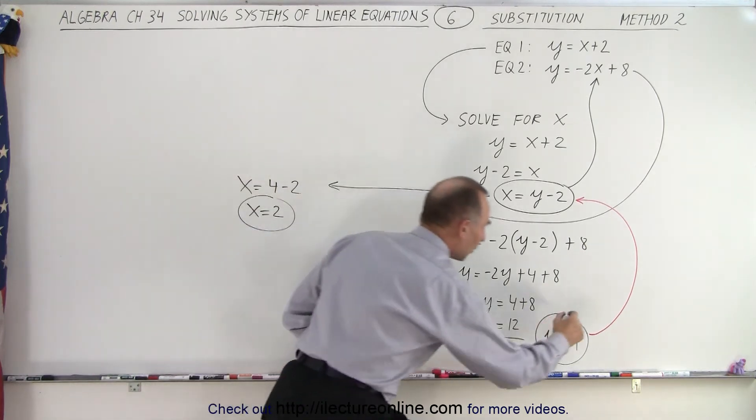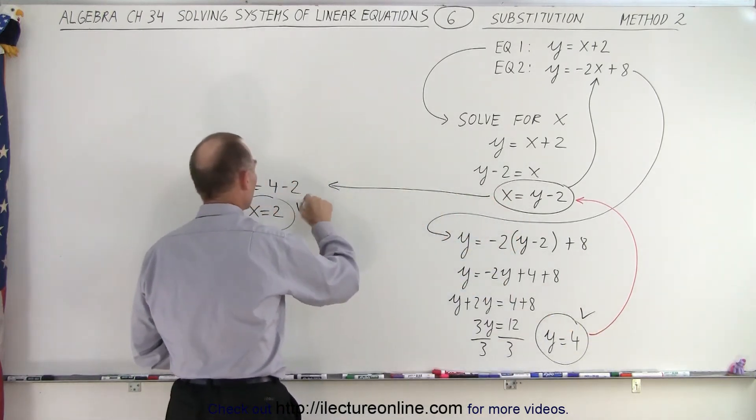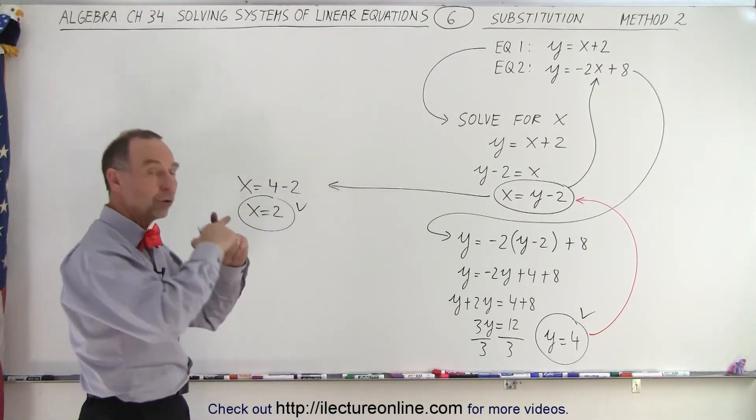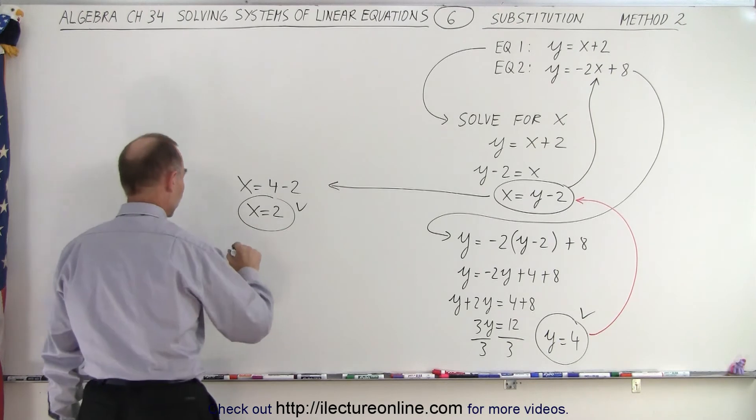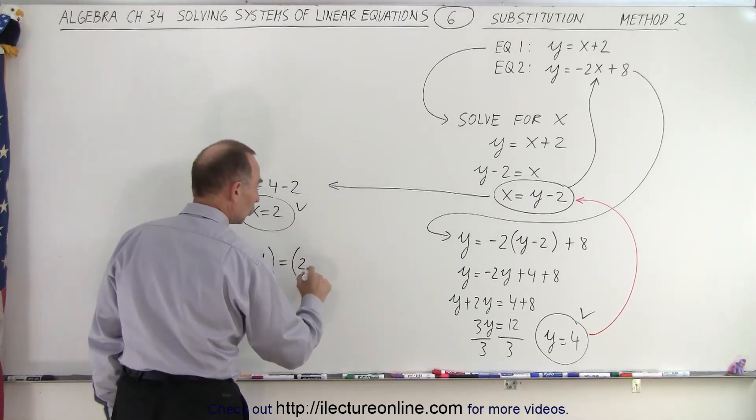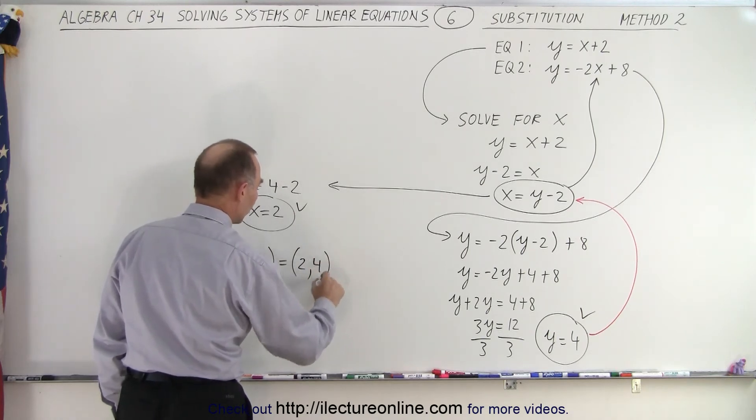And this is how we find the two coordinates, the x and y coordinates of the point where the two lines cross. So the solution is x is equal to 2 and y is equal to 4.